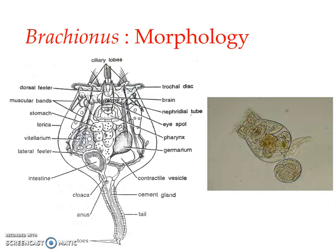Brachionus is a common freshwater rotifer usually found inhabiting ponds, ditches, etc. As already mentioned in the case of rotifers, sexes are separate and they do exhibit sexual dimorphism. In Brachionus, the male is much smaller than the female. Males are short-lived and have a degenerating organization — most structures and systems are absent. The males don't have a mouth, digestive tract, or anus, but they do have disproportionately large testes and a penis.